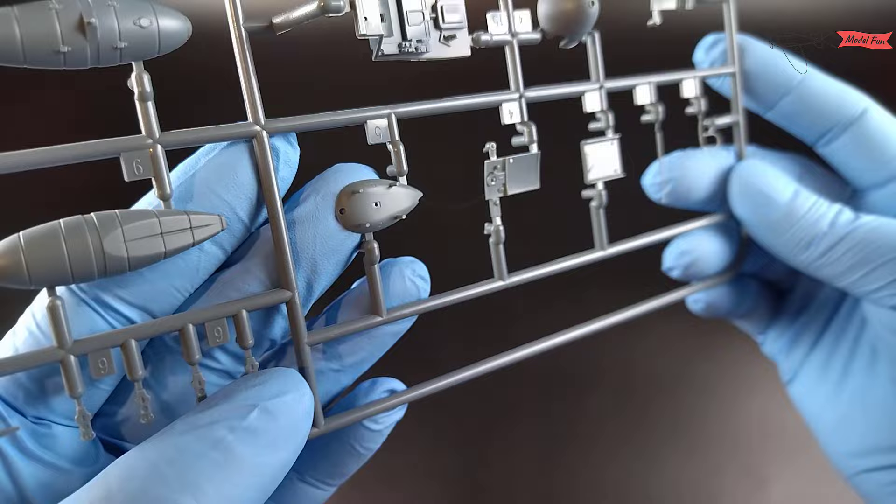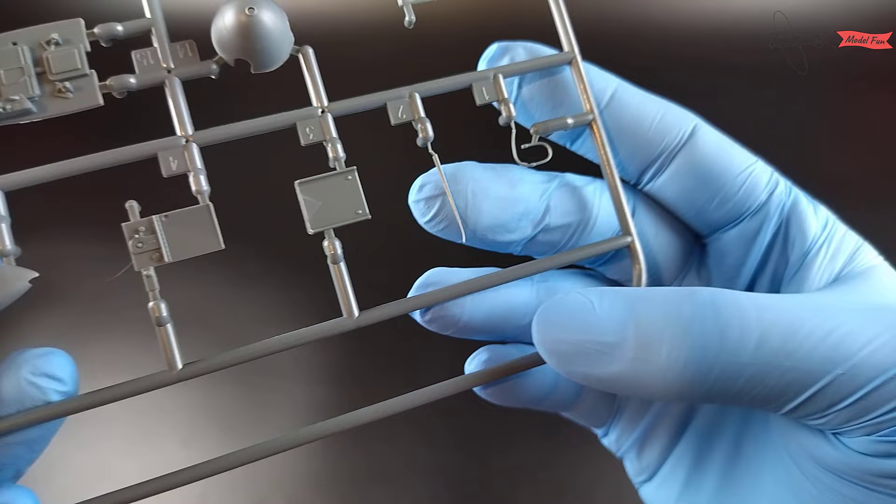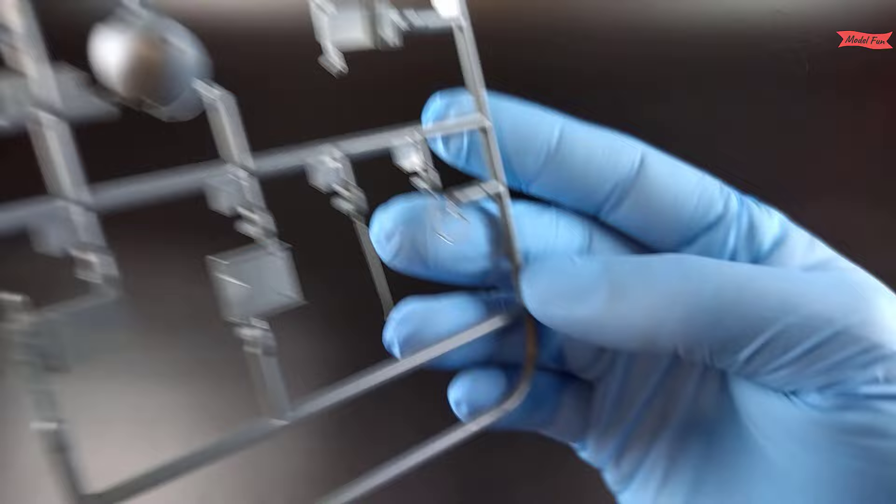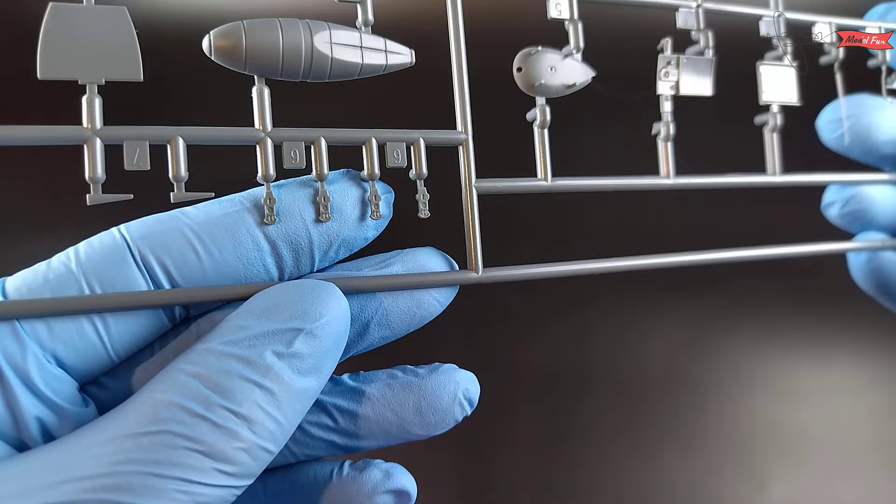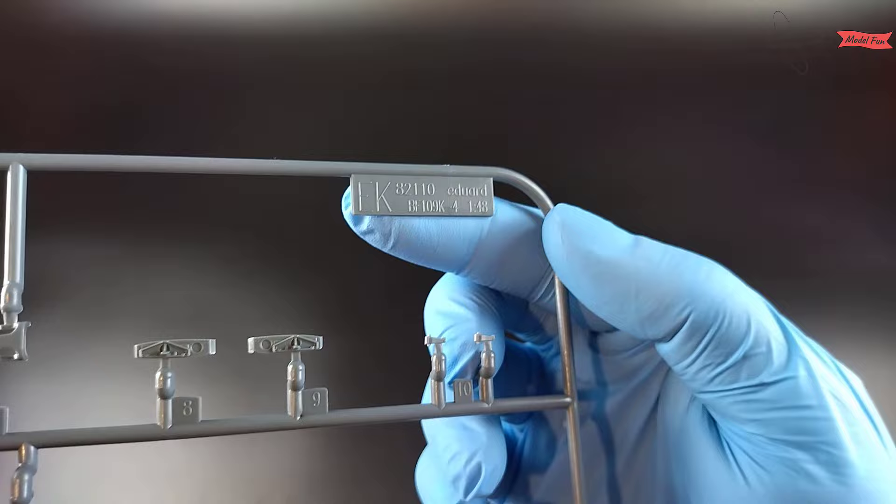Cockpit floor, pilot seat, drop tank rack, oxygen hose and underwing antenna. All very nice. Two sets of pedals, again spare parts.